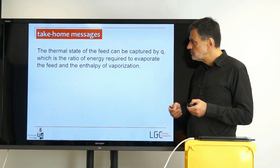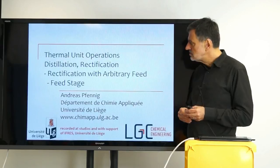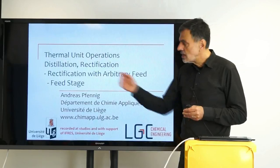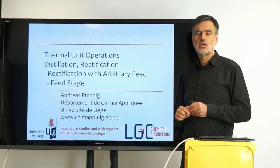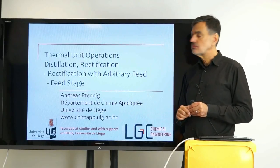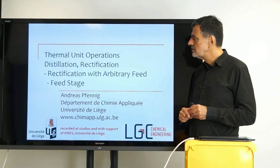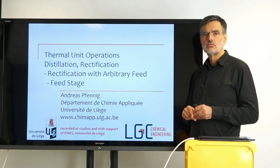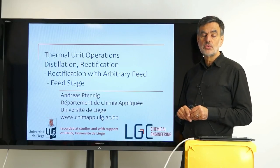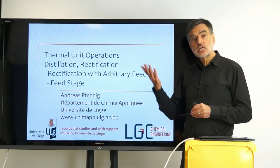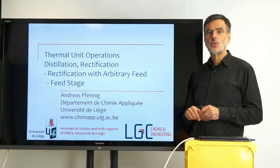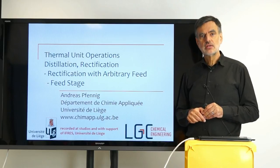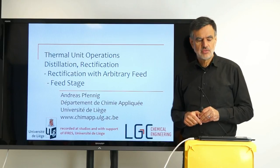With that, we have answered one of the two questions from the beginning: how the thermal state of the feed influences the ratio of flow rates in the stripping and rectifying sections. The thermal state of the feed is captured by the parameter Q. In the next video, we want to look at the second question we had at the beginning. Thank you very much.